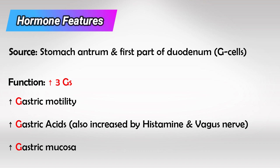Remember that gastric acids are secreted by parietal cells in the stomach. Parietal cells are stimulated by gastrin, by histamine, and by the vagus nerve.